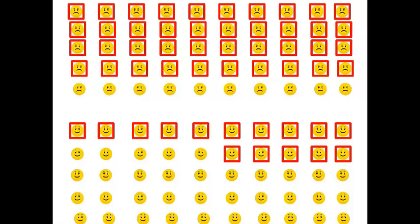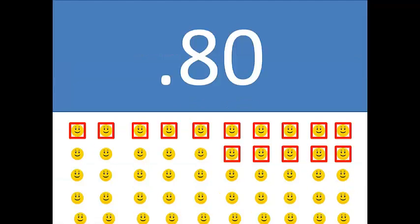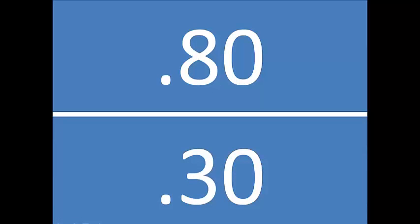Without even knowing what a likelihood ratio actually is, you can look at this board and say that someone with the disease is probably about two and a half times more likely to test positive than someone without the disease. That's really all that a positive likelihood ratio is. In this case, 80% of the people with the disease tested positive — that's sensitivity — and there were 15 out of 50 false positives, which gives you 30%.